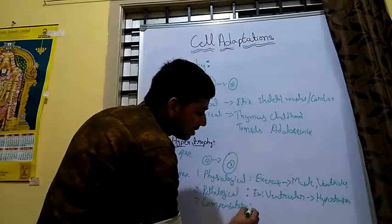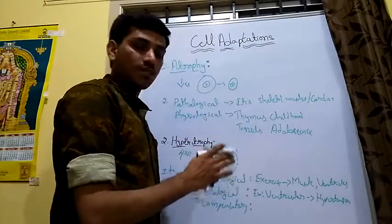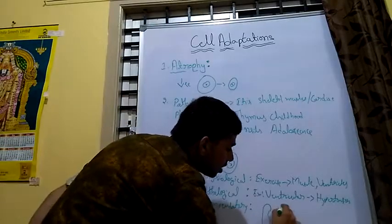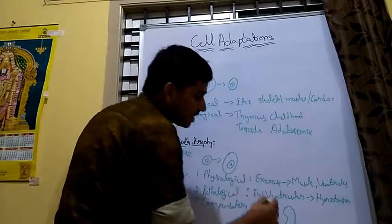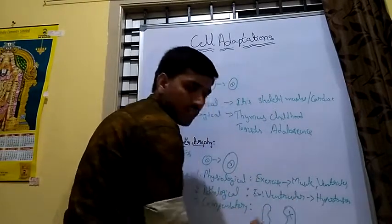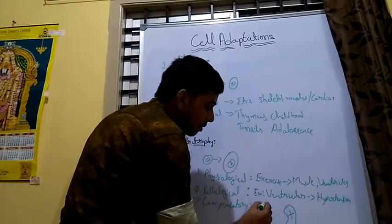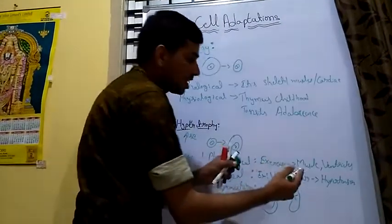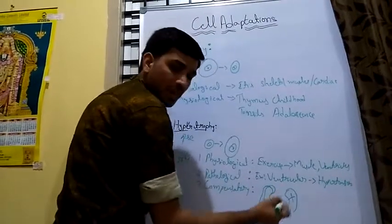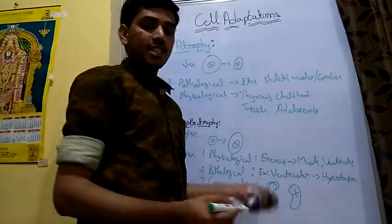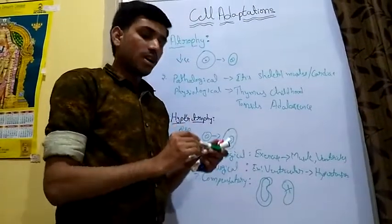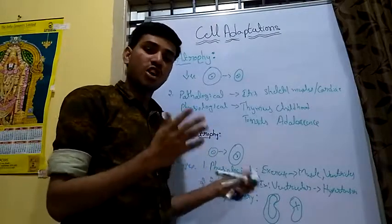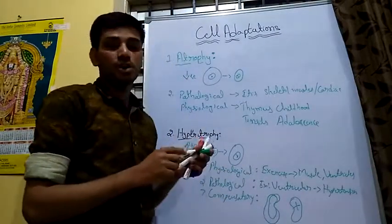In compensatory hypertrophy, when any one organ fails to function — for example, in the kidneys, which are two organs — if one kidney fails to function, the other kidney becomes hypertrophied to compensate for the function and overcome the dysfunction of the other kidney. Similarly, if one arm is dysfunctional, the other arm becomes stronger by means of hypertrophy.